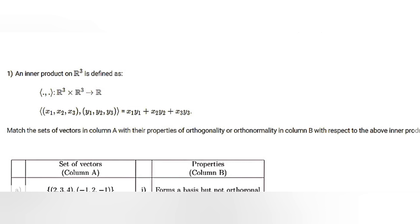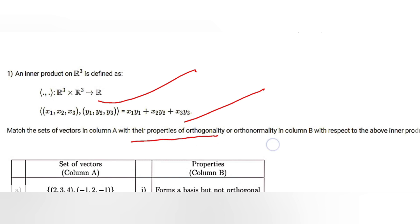Let's start solving question number one of the week nine graded assignment. The question states that an inner product on R3 is defined as: for vectors (x1, x2, x3) and (y1, y2, y3), the inner product equals x1*y1 + x2*y2 + x3*y3. We have to match the sets of vectors in column A with properties of orthogonality and orthonormality in column B, with respect to the above inner product.